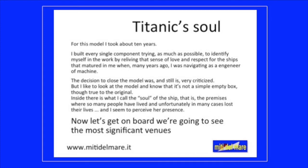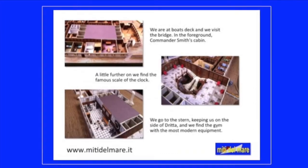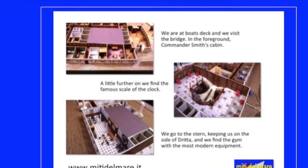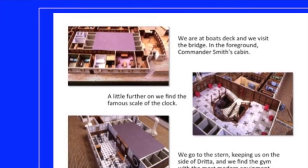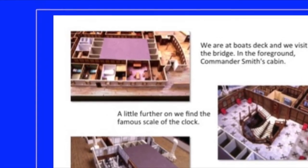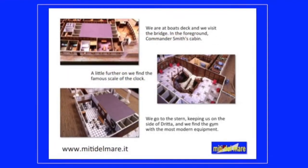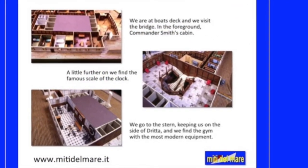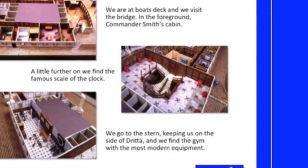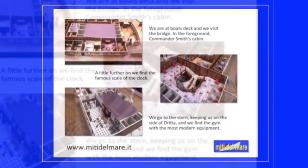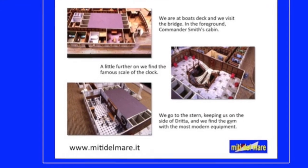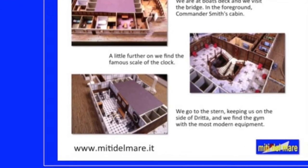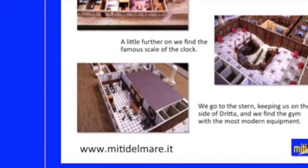Let's get on board and see the most significant venues. We are at the boat deck and we visit the bridge. In the foreground is Commander Smith's cabin. A little further on we find the famous staircase with the clock. We go to the stern, keeping to the starboard side, and find the gym with the most modern equipment.